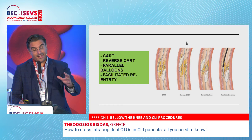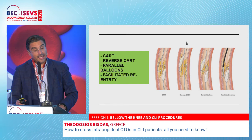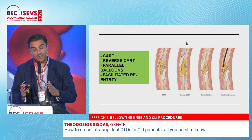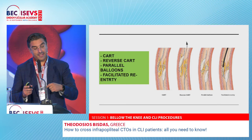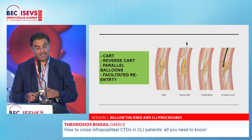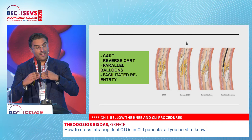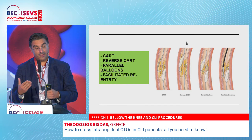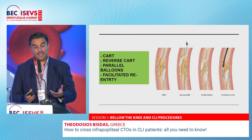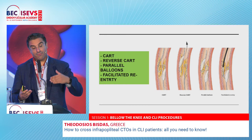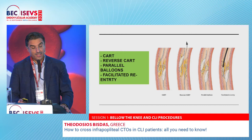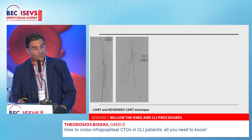When difficulties arise, we have techniques like the CART technique — opening the subintimal space with a balloon from below and penetrating with a wire from above. The reverse CART technique is the opposite. If neither works, parallel balloons can be used: inflate both balloons at the rendezvous level to cut the membrane and insert the wire. The fourth technique uses a re-entry catheter — inflate a balloon from below, come from above with the re-entry catheter, penetrate the balloon, and connect the two lumens.